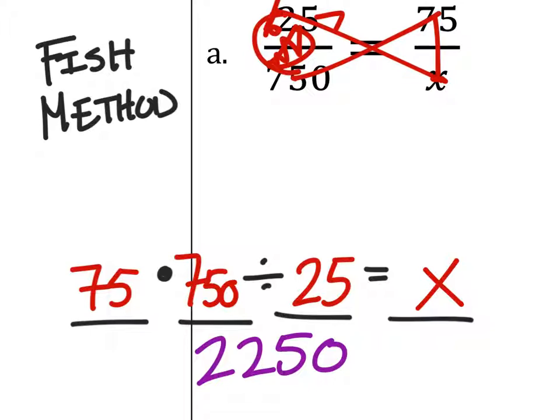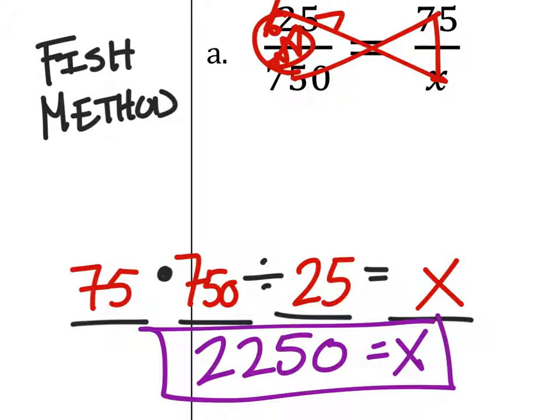Alright, so, 2250 is the x. You don't have to write equals x, but you can. And there you go. Thank you.